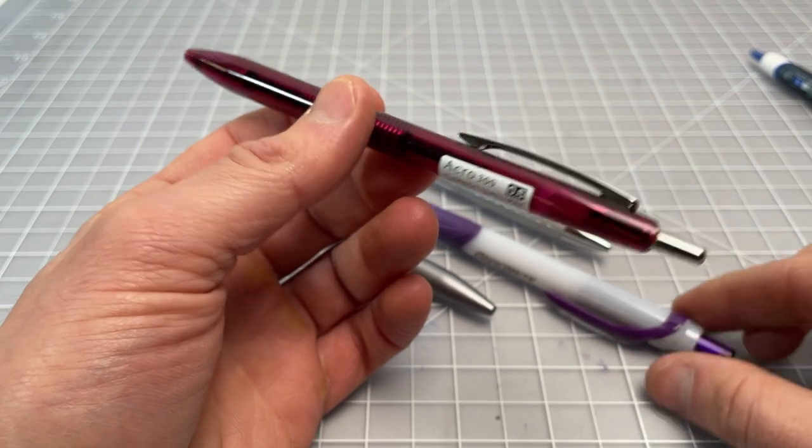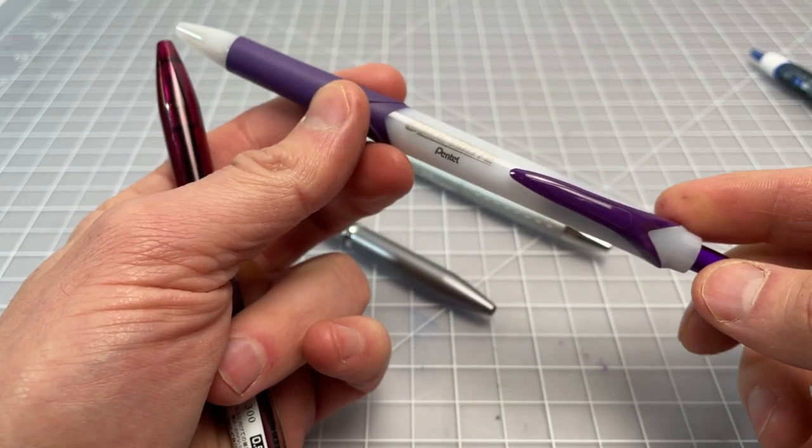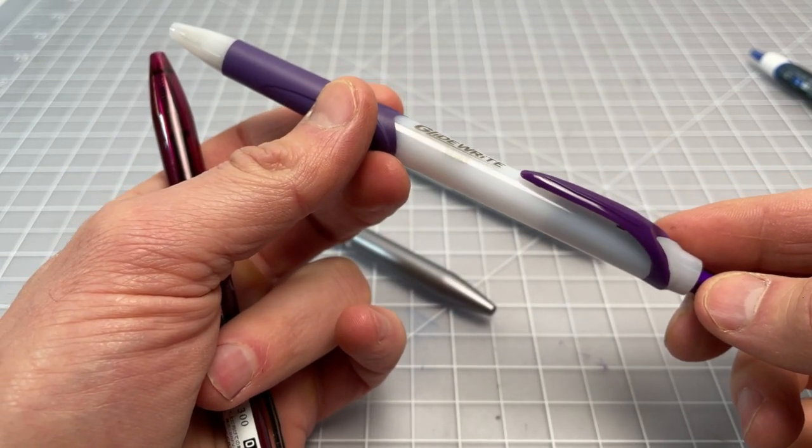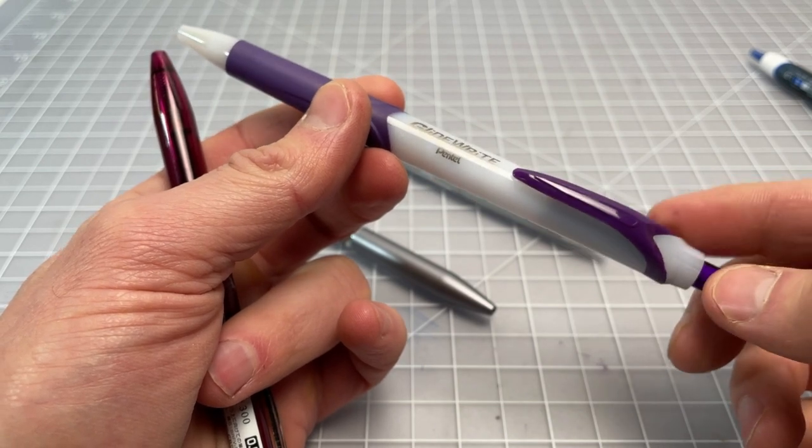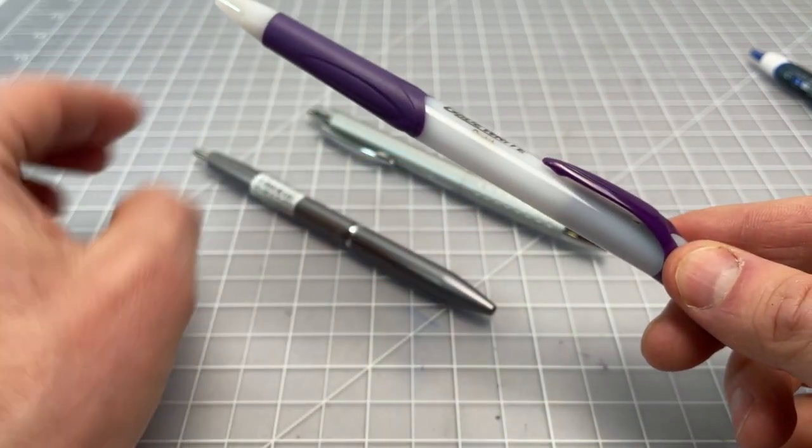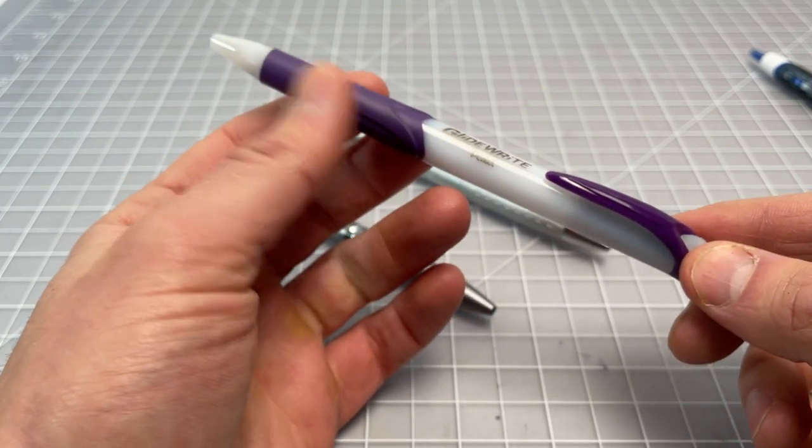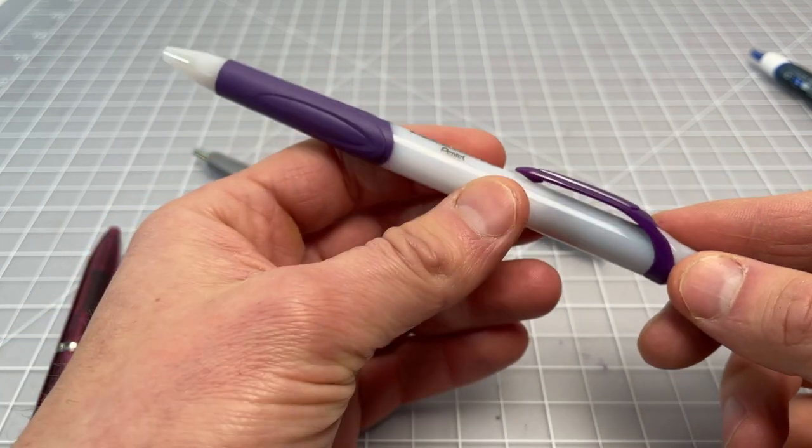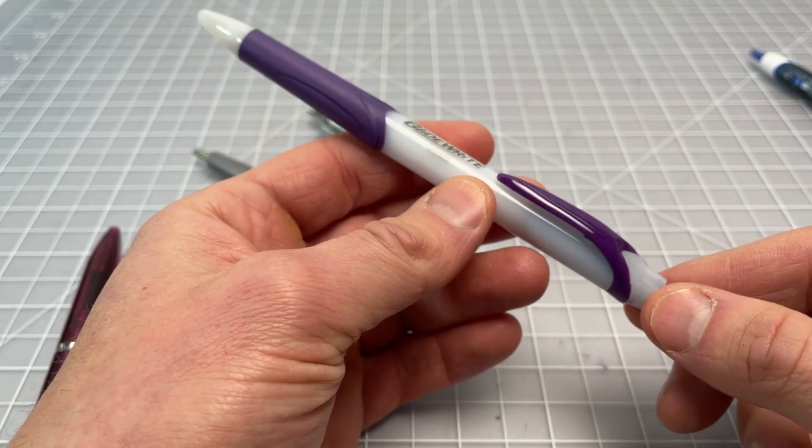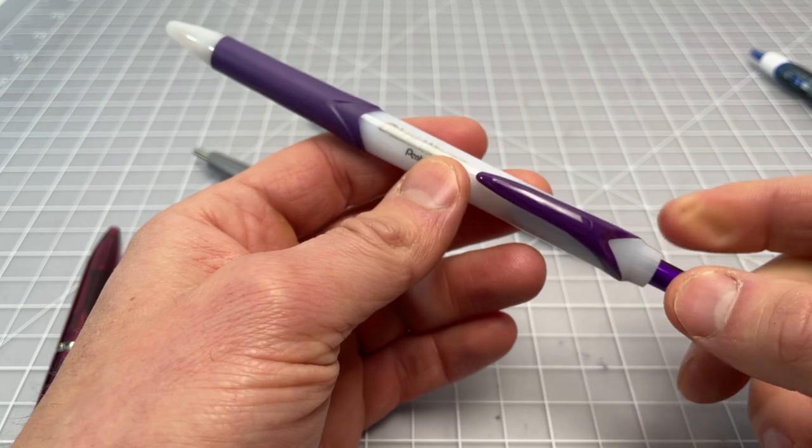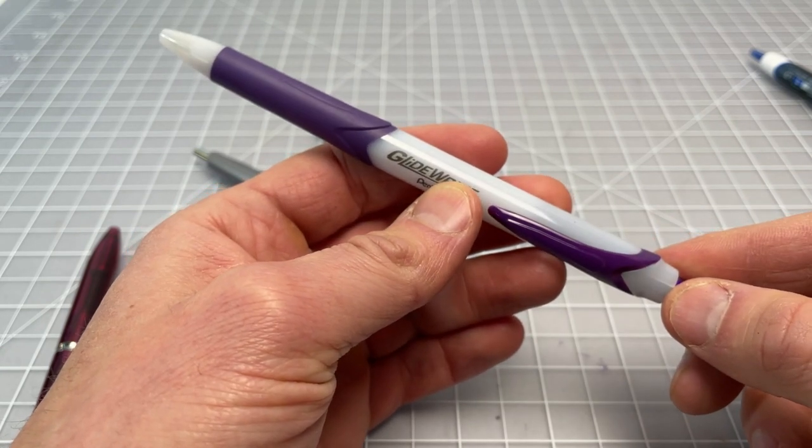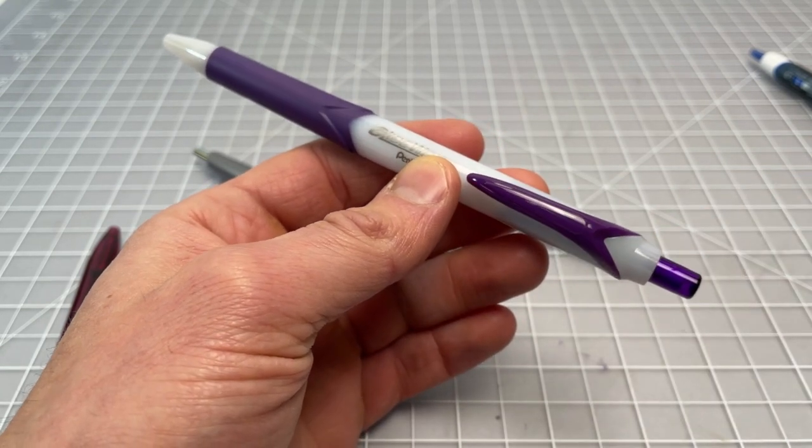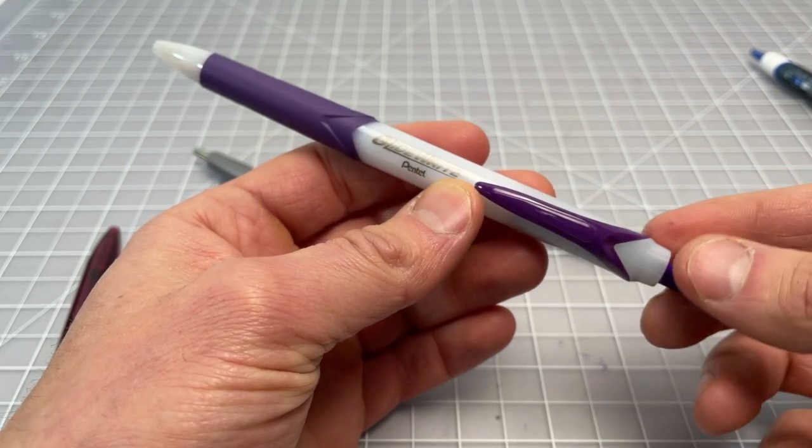And then there is the Acroball, which would be a direct comparison to the Gliderite. I don't have an Acroball handy, but the styling is more in line with the Gliderite. The Acroball has the sneaker style grip and the plastic body. That is probably a pretty close comparison, but the Acroball doesn't have an executive style pen. It has a premium, but it's not a true executive style pen.